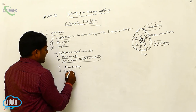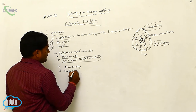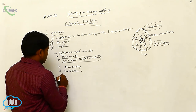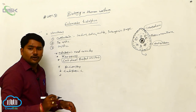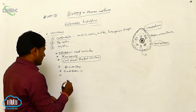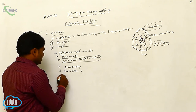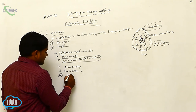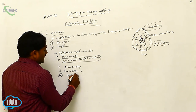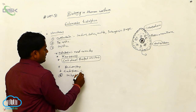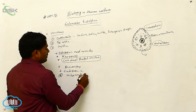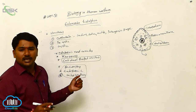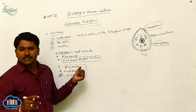Among other organelles, the Golgi complex and endoplasmic reticulum are present. However, mitochondria are absent within the endoplasm of Entamoeba histolytica.